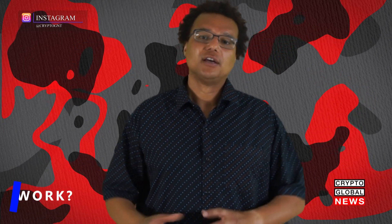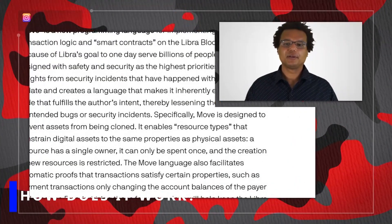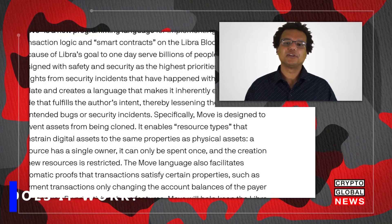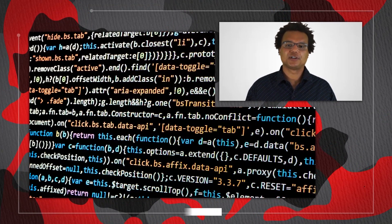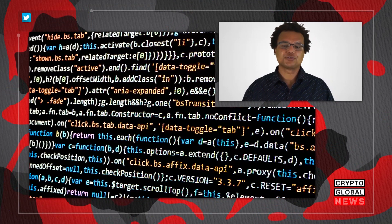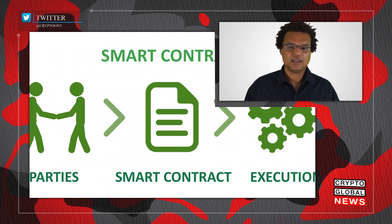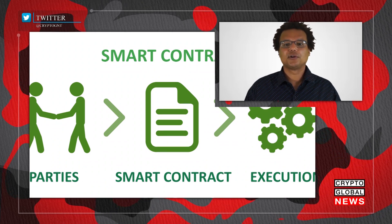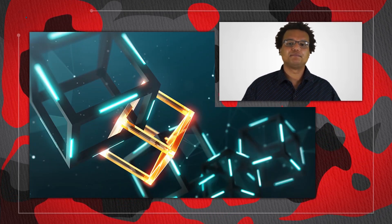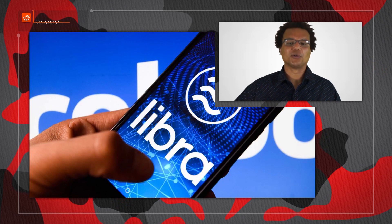This brings us to the actual breakdown of how Libra works. We will start with Move, which is a programming language built for implementing custom transaction logic and smart contracts on the Libra blockchain. This is the eventual goal of Libra — to one day serve billions of people. Because of this, Move is designed with safety and security as its highest priority.